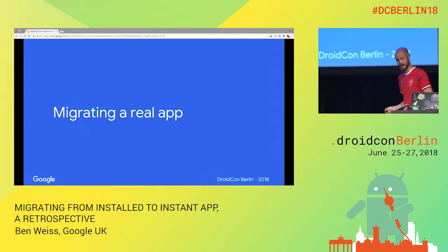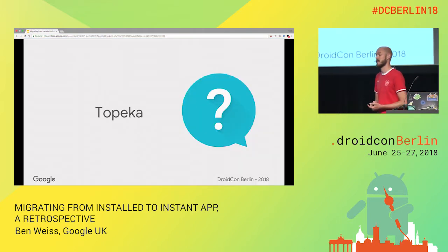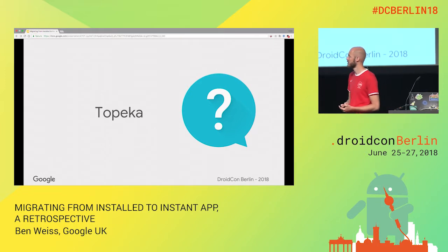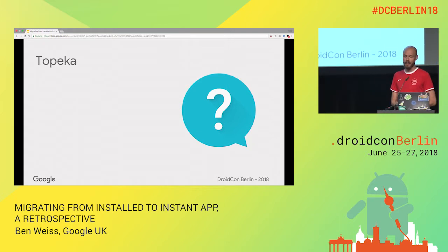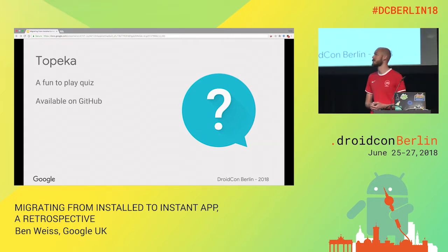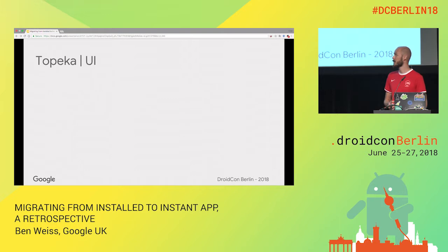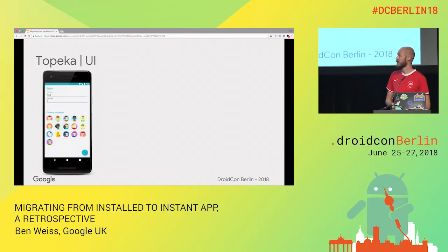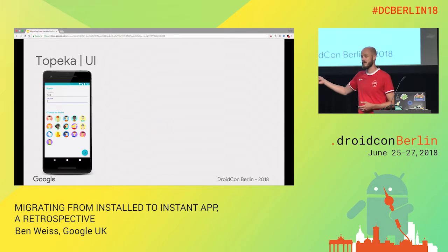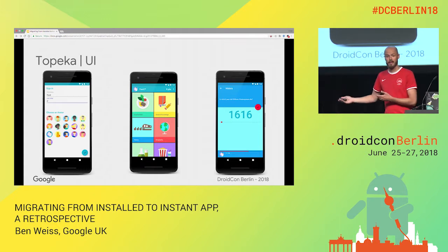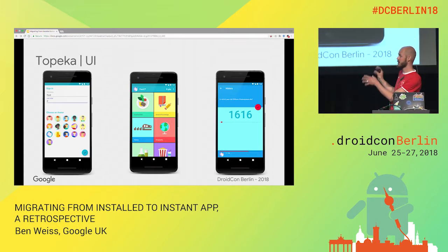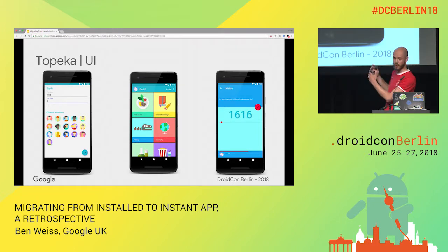Let's take a look at what I did. I migrated a real app — Topeka is a sample I've been working on for a while. It actually was my starter project when I joined Google. It's a fun quiz app available on GitHub. The UI is basically three pieces: first is a sign-in screen, second is the categories you can select, and third is the actual quiz itself. That's what we're going to end up with as feature modules. So firstly, it was a monolith, and we're going to split the app into those three different feature modules.